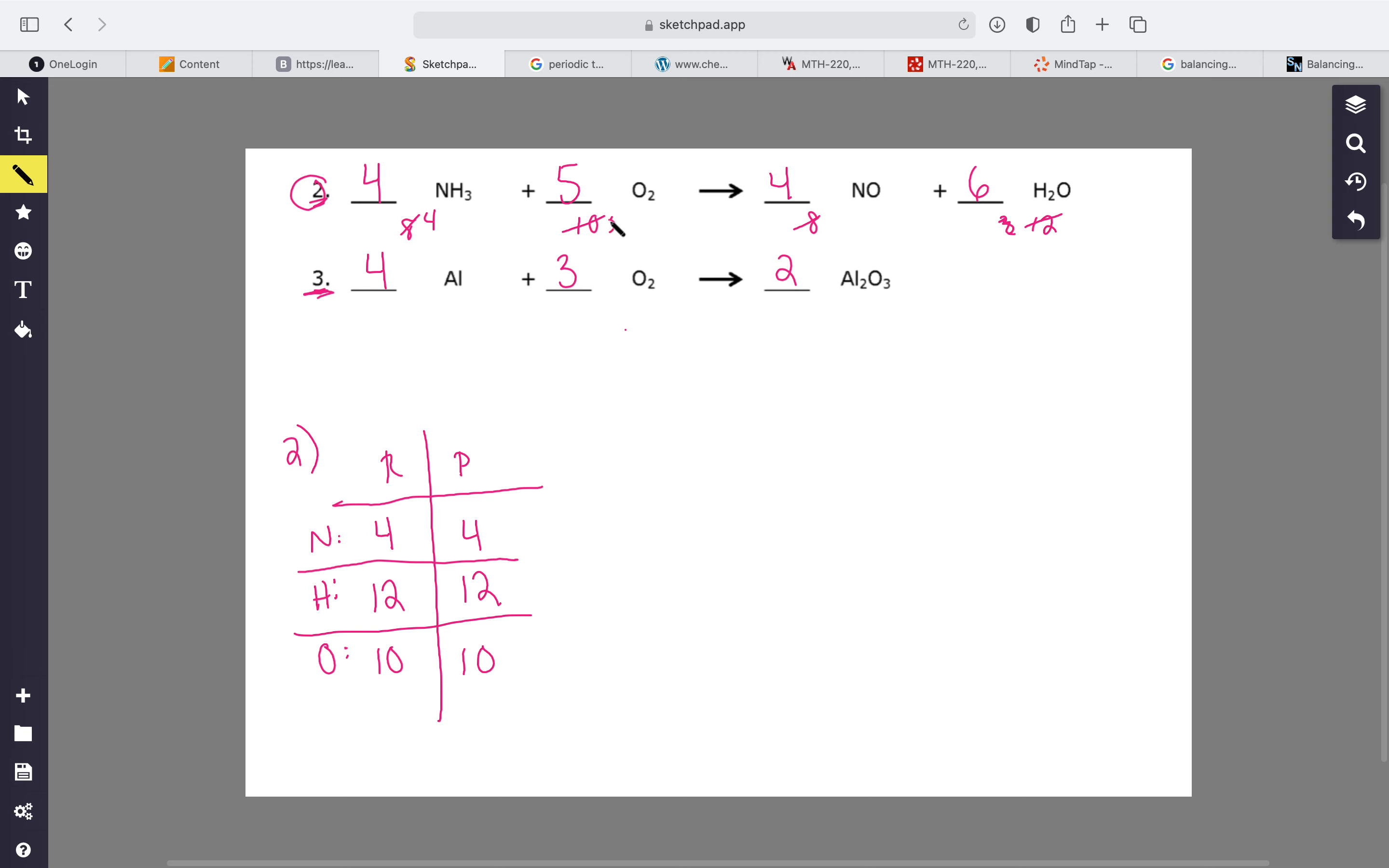So you always want to get the simplest number that you can out of these. You don't want to end up having like one, five, six, two - no, you want to have the lowest number divisible by all of these things.